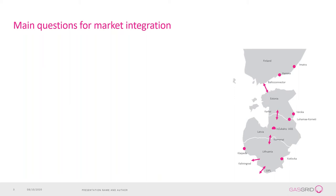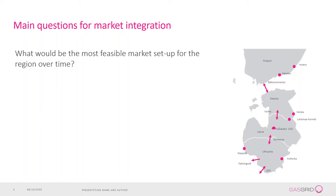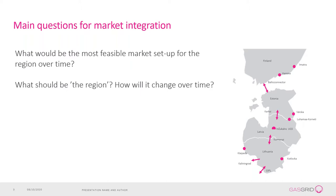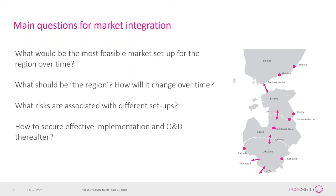In terms of what integration model to select, there are many questions to be answered. You have to start with analyzing the benefits, costs, and risks related to each model and then prioritize between them. In addition, there are multiple practical questions: what should constitute the region, and whether this region might change over time. If there are joint services, how to secure their effective implementation, operation, and development. And finally, how to actually reach decisions, since the benefits, costs, and risks might not be equally shared between the participating countries.